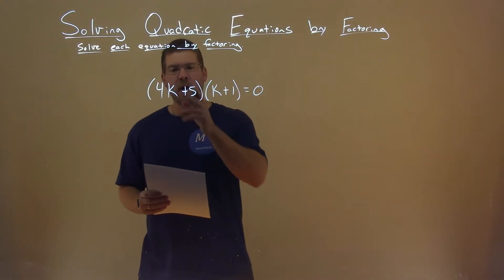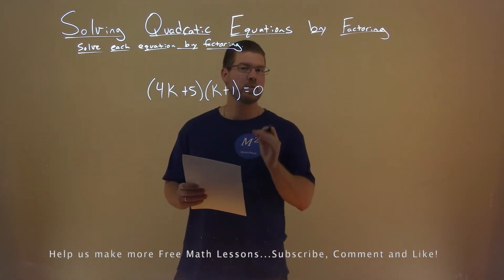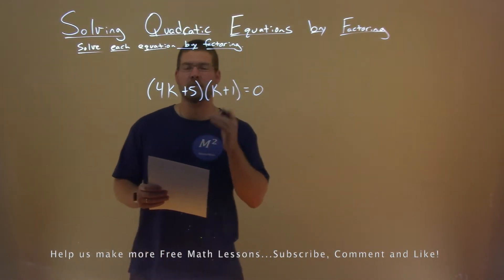We're given this problem right here. 4k plus 5 times k plus 1, and that's equal to 0, and we need to solve this by factoring.